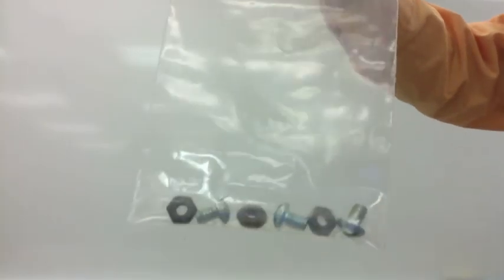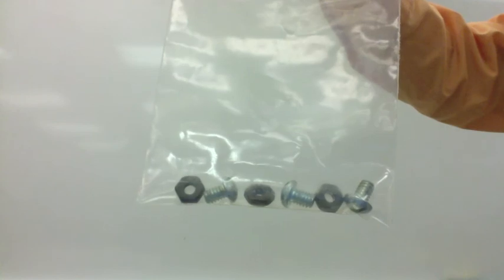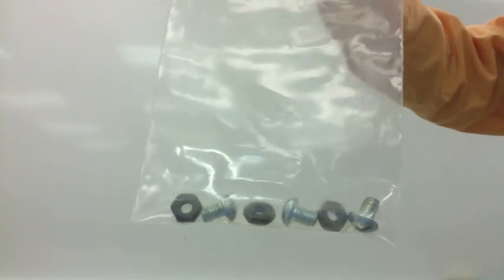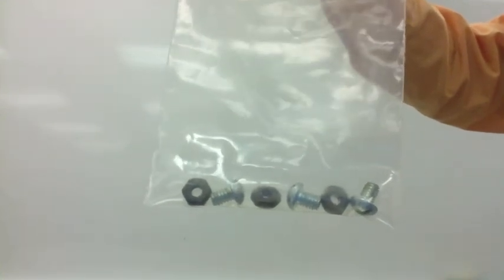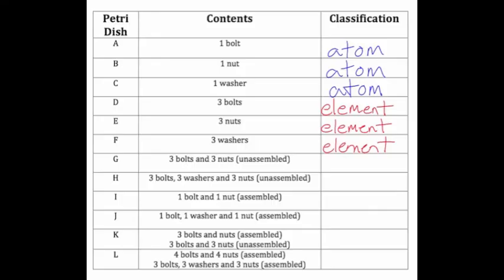Bag G has three bolts and three nuts in the same bag, but they are not assembled together. This is a mixture — two or more atoms that are not bonding together. So on our data table, under G, we put mixture. The elements are not bonding together.